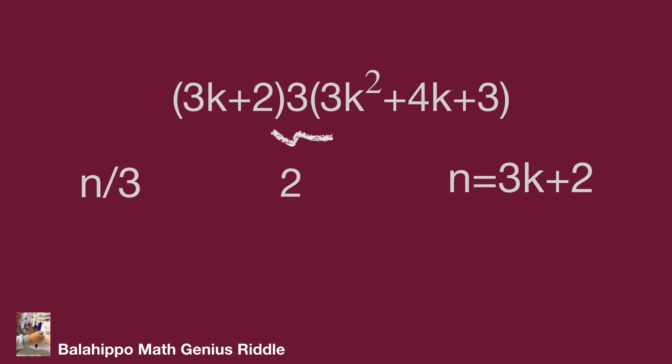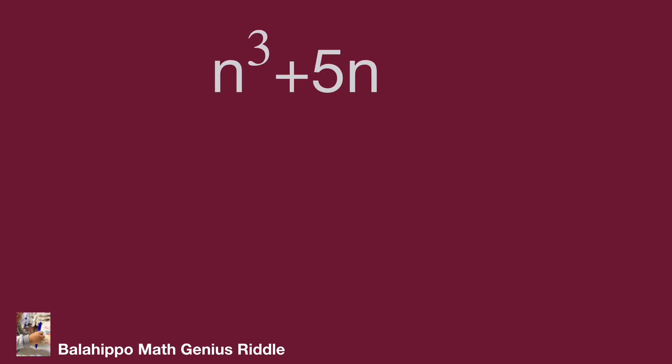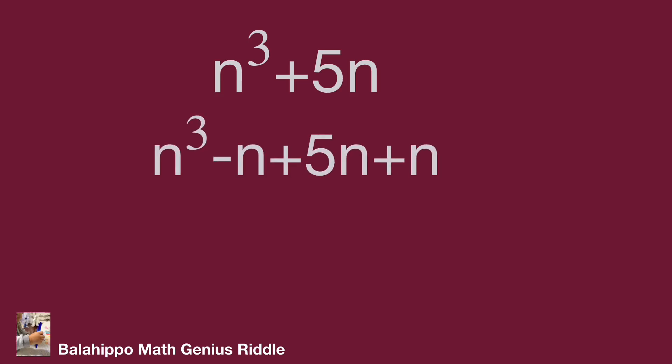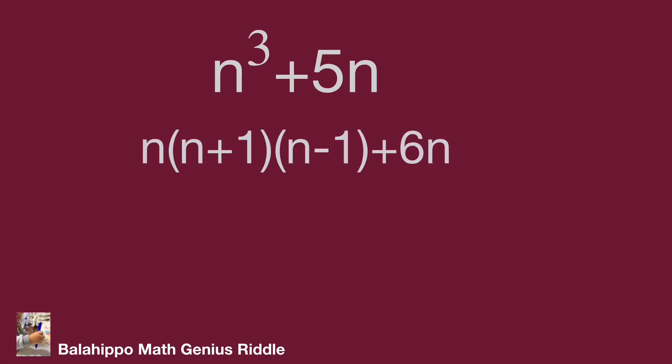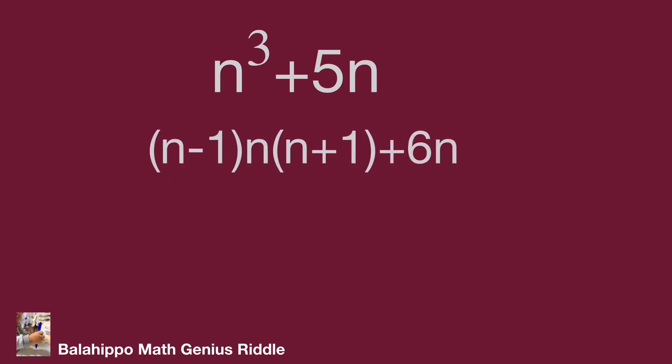Now for the second approach — look at the given expression n cubed plus 5n. We split it into two groups by adding and subtracting n: we get (n cubed minus n) and (5n plus n). The second group gives 5n plus n equal to 6n, which clearly has factor 6. For the first group, n cubed minus n factorizes as n times (n² minus 1), and n² minus 1 factors as (n+1)(n-1), giving us (n-1) times n times (n+1).